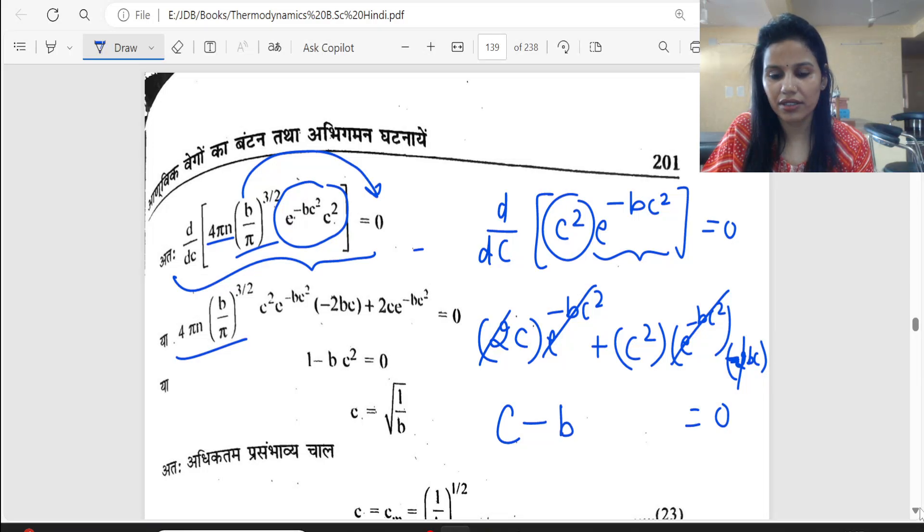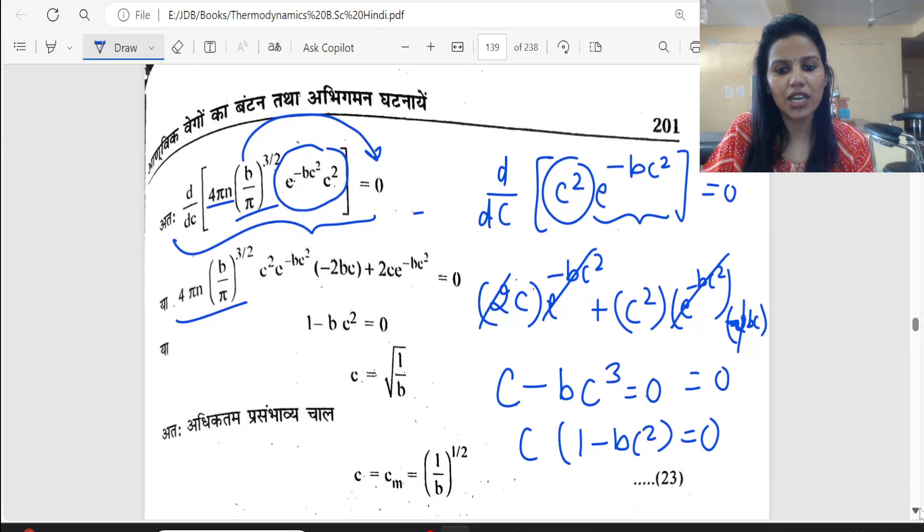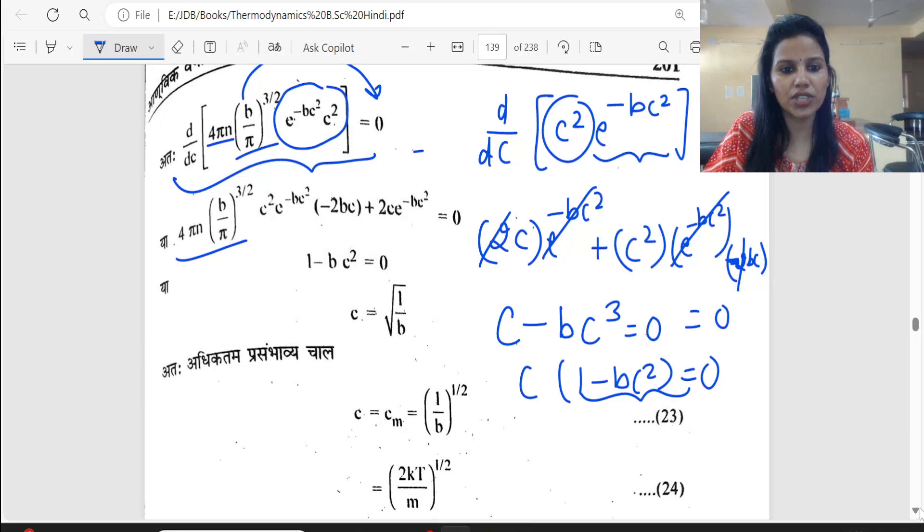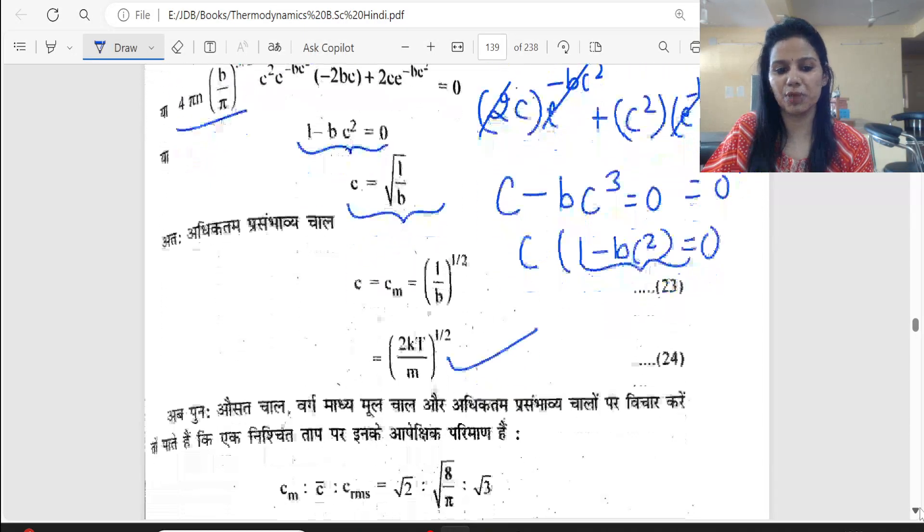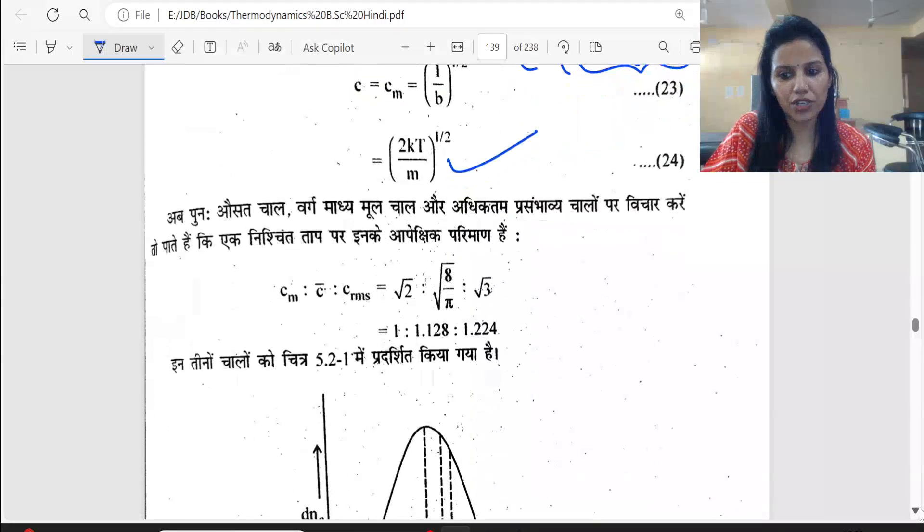2 cancels out. What remains is C minus bc cube equals zero. Take C common: one minus bc square equals zero. C cannot be zero, so one minus bc square equals zero. C equals 1 by root b. And b is m upon 2kT. Put this value and you get the most probable speed.